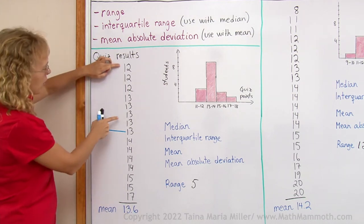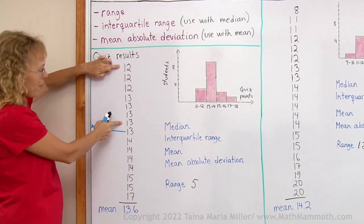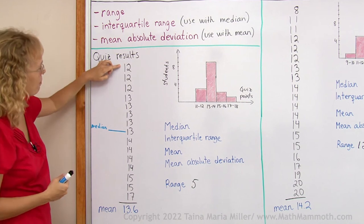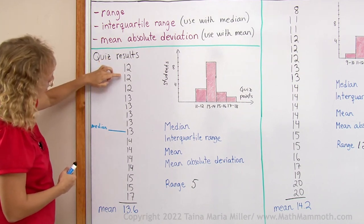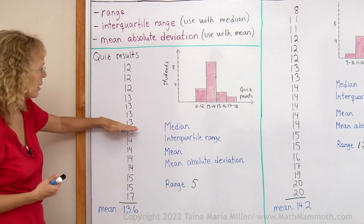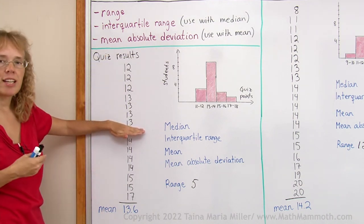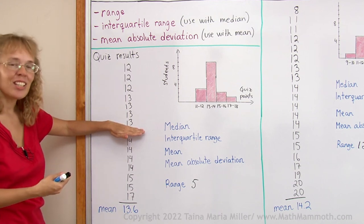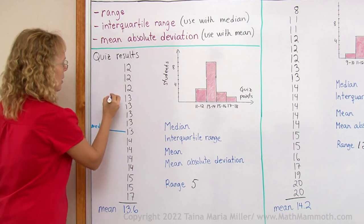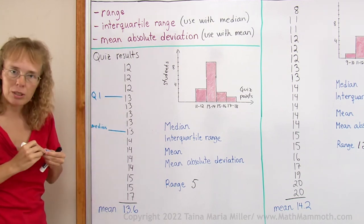And now I look at the first half of the data here and find the median of this. And that will give me the lower quartile. So here I have one, two, three, four, five, six, seven. Seven items. I'm not including the median here. I'm just looking at this lower half of the data. These seven items. And I take the median of that or the middlemost number of this seven, which is the fourth number here.